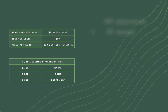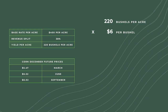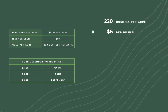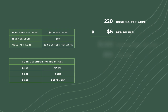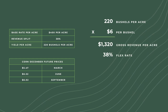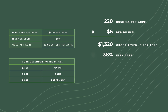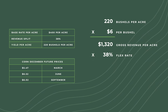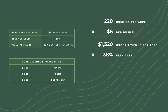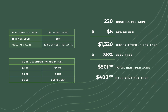We take the average yield of 220 bushels per acre multiplied by the average futures price of $6.00 per bushel to get a gross revenue number of $1,320. We then multiply the gross revenue by the flex rate of 38% to get a total rental rate of $501.60.